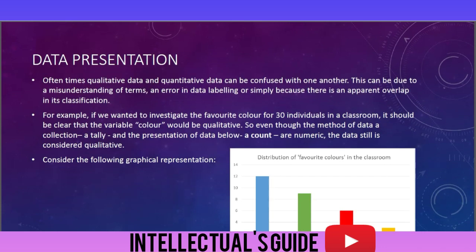Data representation: oftentimes qualitative data and quantitative data can be confused with one another. This can be due to a misunderstanding of terms, an error in data labeling, or simply because there is an apparent overlap in its classification. For example, if we wanted to investigate the favorite color for 30 individuals in a classroom, it should be clear that the variable color would be qualitative. So, even though the method of data collection and the presentation of data below are numeric, the data is still considered qualitative.